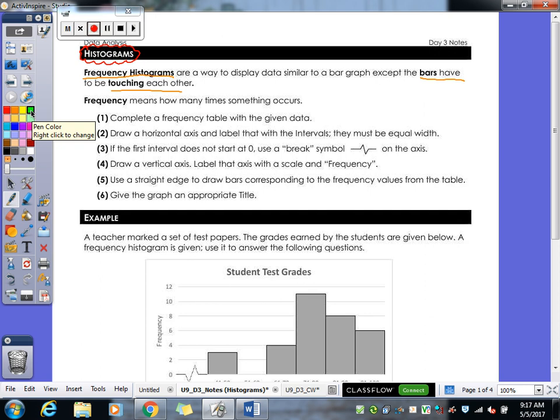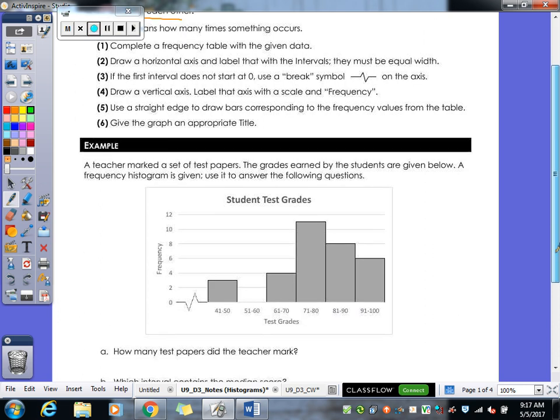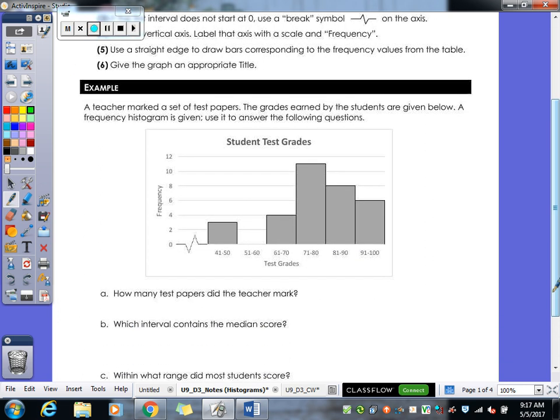So a frequency means how many times something occurs. So if you had to draw a frequency histogram you would complete the table, draw your horizontal axis all this good stuff and you'd follow these lines here. But this is what a frequency histogram ends up looking like. So we've got our x axis down here. You've got your y axis right there. Those always have to make sure that those are drawn in.